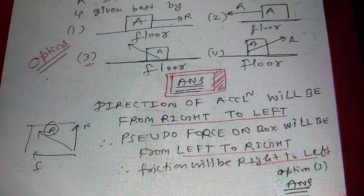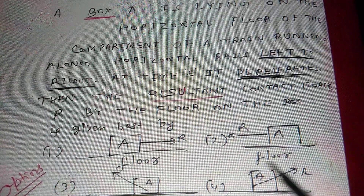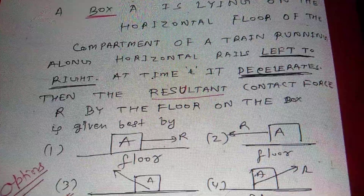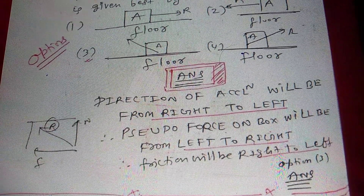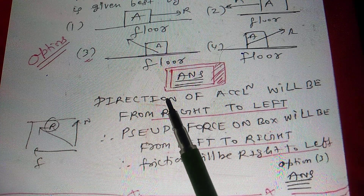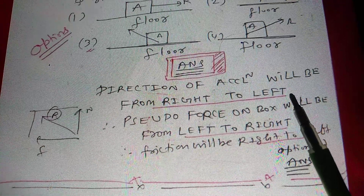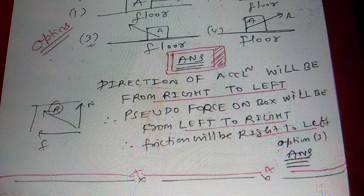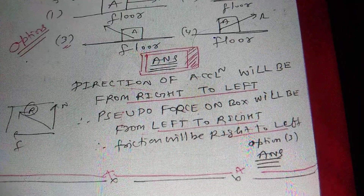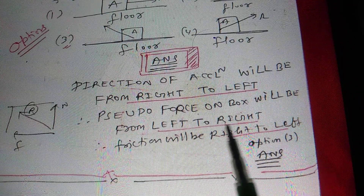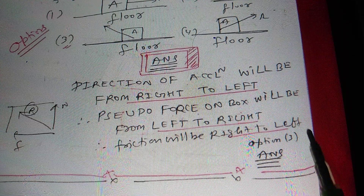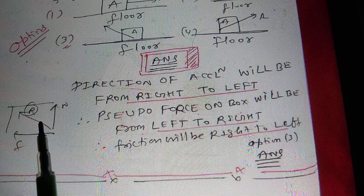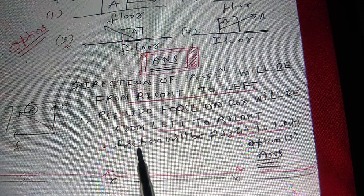The compartment is running left to right and it decelerates, so the direction of acceleration is right to left. If the observer is inside the compartment, he is in a non-inertial frame. There will be pseudo force on the box directed left to right, and friction will act right to left. The frictional force is in that direction and normal force is upward, so the resultant contact force will be oblique — the answer is option three.